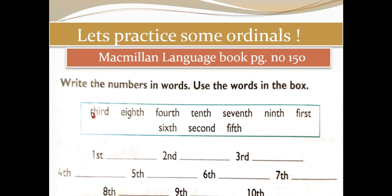Write the numbers in words. Use the words in the box. Here you can see there's a box and the spellings of the ordinal numbers are given. I will read the spellings in the box: third, eighth, fourth, tenth, seventh, ninth, first, sixth, second, fifth.